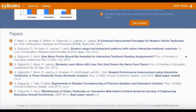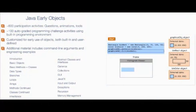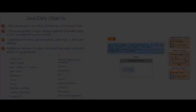The Java Early Objects Zybook contains 600 participation activities in the form of question sets, animations, and interactive tools, as well as 100 auto-graded and embedded programming challenge activities, 18 pre-built coding challenges, and the ability to fully customize the Zybook to fit your course needs and those of your students.